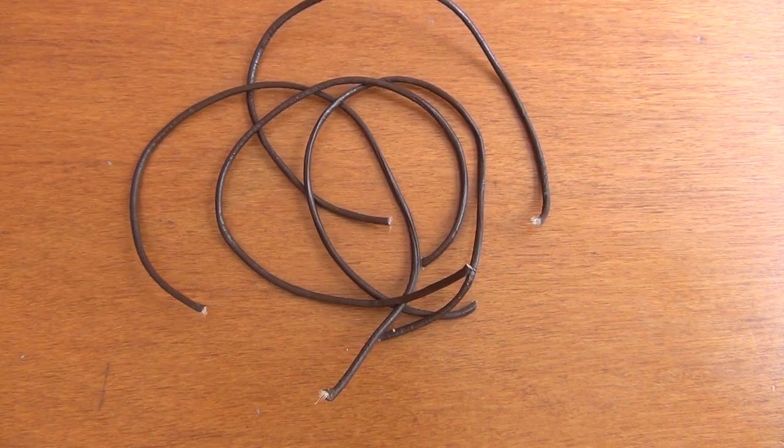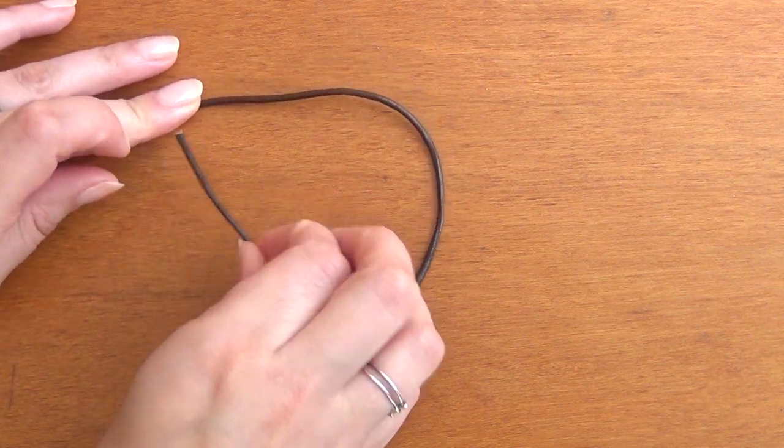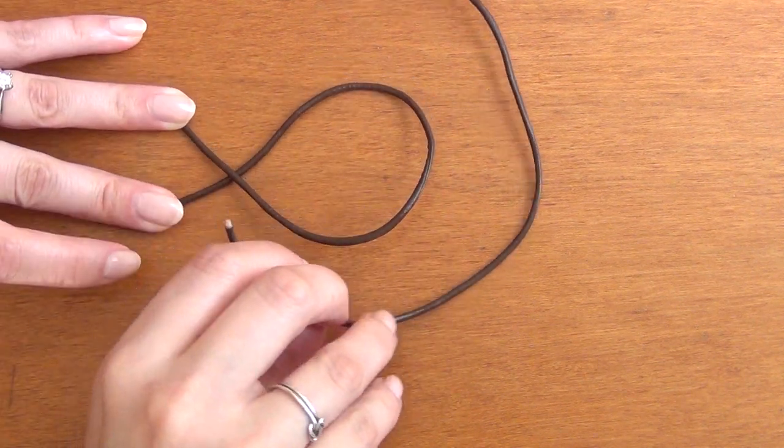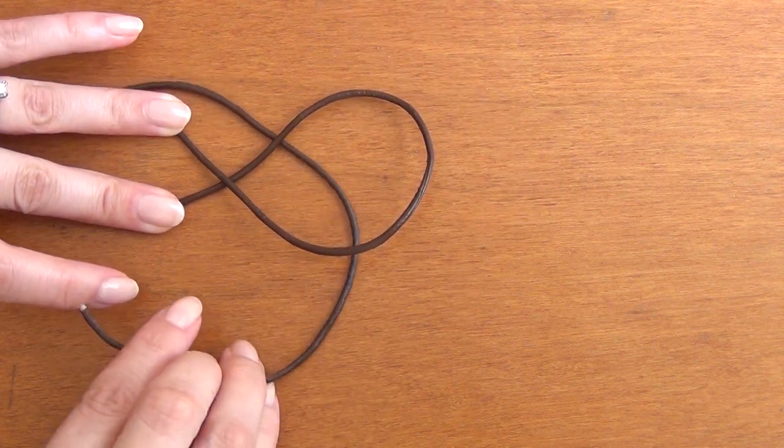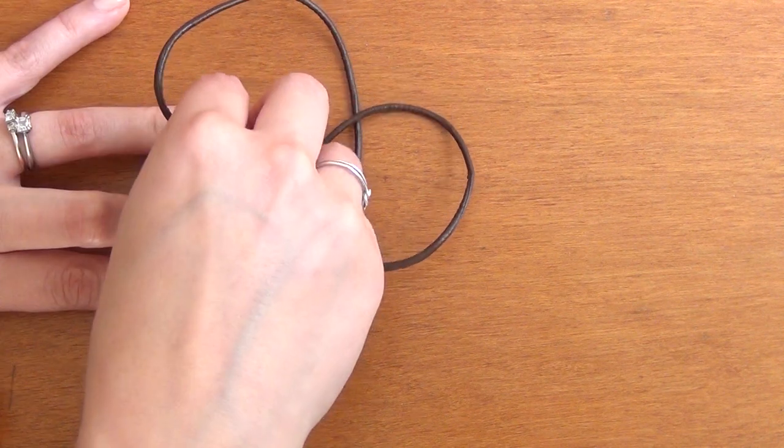Start by taking a piece of lace, make a U-shape with it, and then cross the tails over. Hold those down with your ring and middle finger. Take a second piece of lace, put it under the round shape you've made, hold one end down with your index finger and grab the other end.